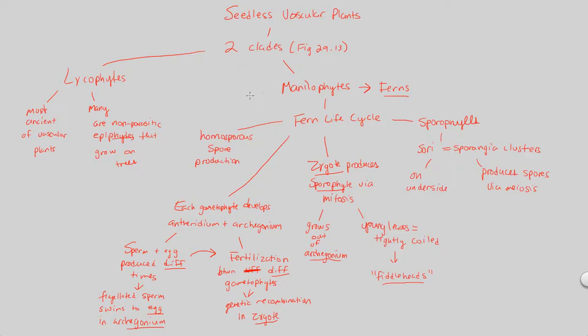And that's it. That covers our seedless vascular plants, the lycophytes, monilophytes. Focus on the fern life cycle, look at the similarities, a little bit of difference between the fern life cycle and the bryophyte life cycle. And that covers our first look at plant diversity one.